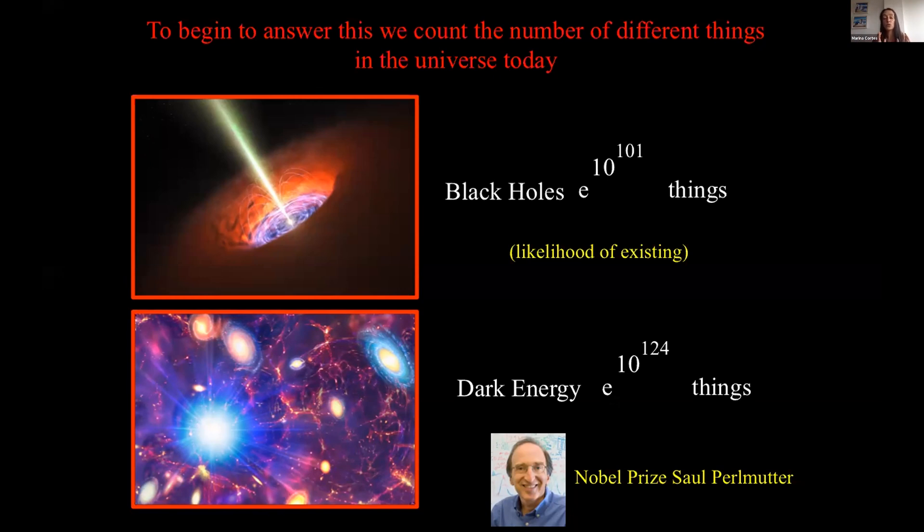20 years ago, Saul Perlmutter and other colleagues, and I know most of you know Saul from the Bay Area, he won the Nobel Prize because he discovered dark energy, which is repulsive gravity, dominates the universe, and has a lot more complexity in it.